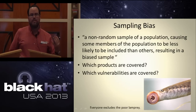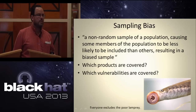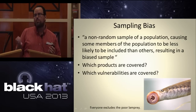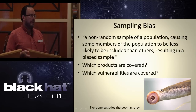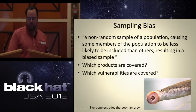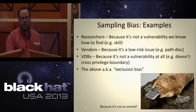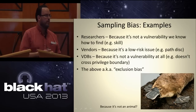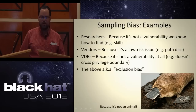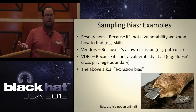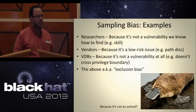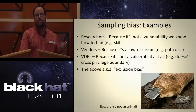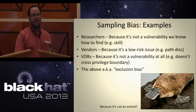Another kind of bias is sampling bias, where you don't do a random sample — and there may be good reasons for that. For example, which products are you going to cover, or what are the most severe issues to cover once you've determined products? Researchers go based on their own skills and preferences — that's their sampling error. For vendors, they might not necessarily prioritize low-risk issues. And for vulnerability databases, we get into arguments about whether something really is a vulnerability or not and does it qualify for inclusion.